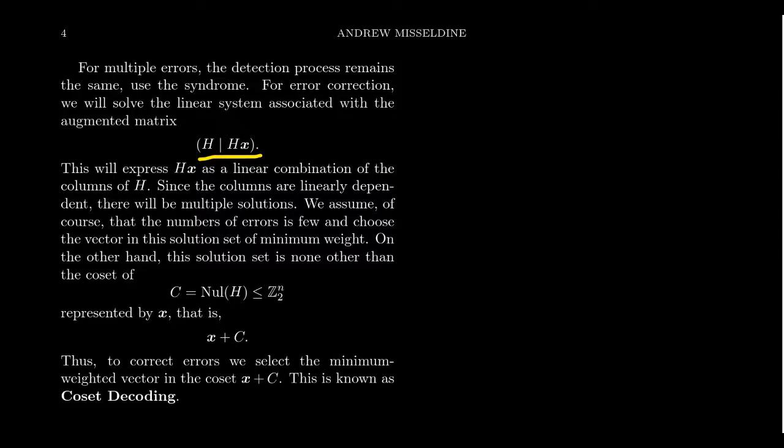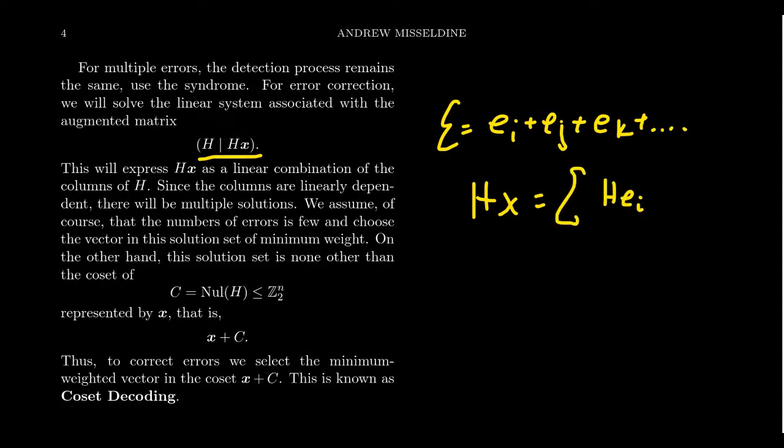So you take H, augment the syndrome, and you solve that. The reason you're doing that is you're trying to figure out what linear combination of the columns of H will produce H of X. And the error, because if there's multiple errors, epsilon would look like maybe there's an EI plus an EJ plus like an EK, however many there are. We want to figure out which columns of H coincide with the syndrome. So we want to figure out that H of X is equal to a sum of some HEIs, where I is in some index set. We want to figure out which combination produces H of X right here.